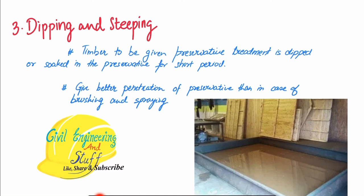The next method is dipping and steeping. In this method, a tank is filled with preservative and the timber surface is dipped into it for a certain period of time — maybe one hour or up to 24 hours — depending on the viscosity of the preservative and the quality of the wood. From time to time the wood is stepped, meaning it is turned upside down. This long-term exposure ensures that the preservative is completely absorbed by the wood surface.